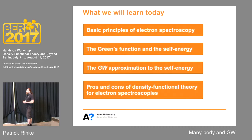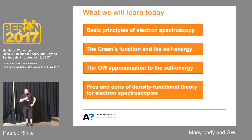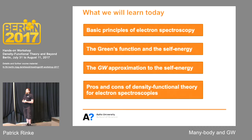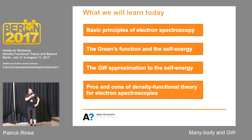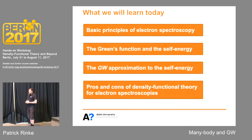What I'll do in this lecture today is to give you the basic principles of spectroscopy. You've done a lot of ground state work. Now we're perturbing the ground state and moving to excited states. Then I'll introduce the Green's function and the closely related self-energy. Because we're good scientists, we will make an approximation that makes the theory tractable, and that's what's implemented in FHI-aims. At the end, I'll talk about why we're not doing this with density functional theory.